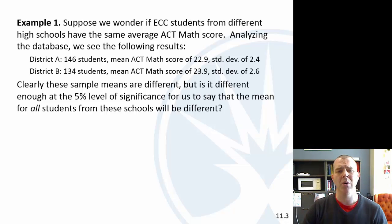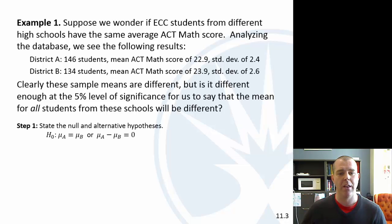Let's suppose that we're looking at students coming to ECC, and we're wondering do the districts that they come from all have the same average ACT score. I have two different districts here, and this is actual sample data. From District A they had a mean score of 22.9, and from District B a mean score of 23.9 with those standard deviations. Clearly the sample means are different, but is it significant enough for us to say that it's statistically different, that all students coming from those schools, this was just a random sample. So we're going to do a hypothesis test.